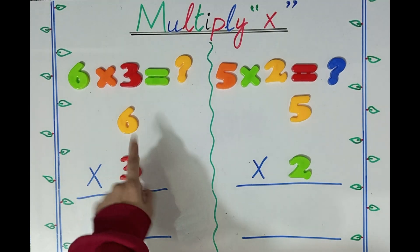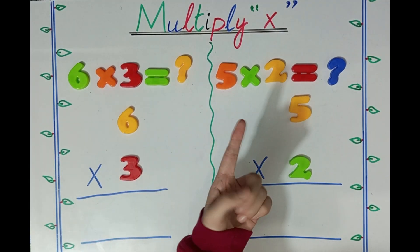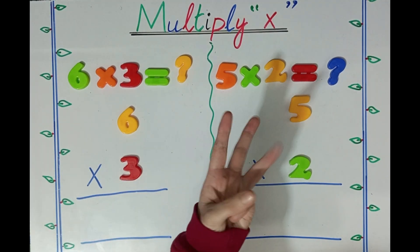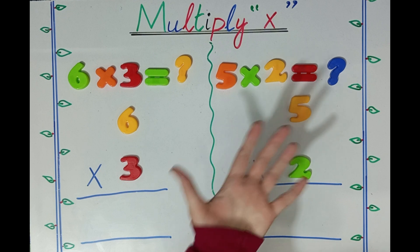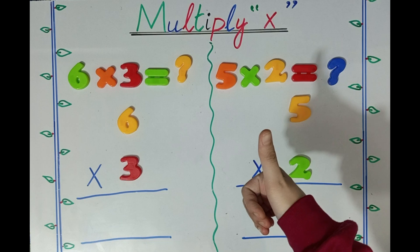We will learn: 1 times 3 is 3, 2 times 3 is 6, 3 times 3 is 9, 4 times 3 is 12, 5 times 3 is 15, 6 times 3 is 18.